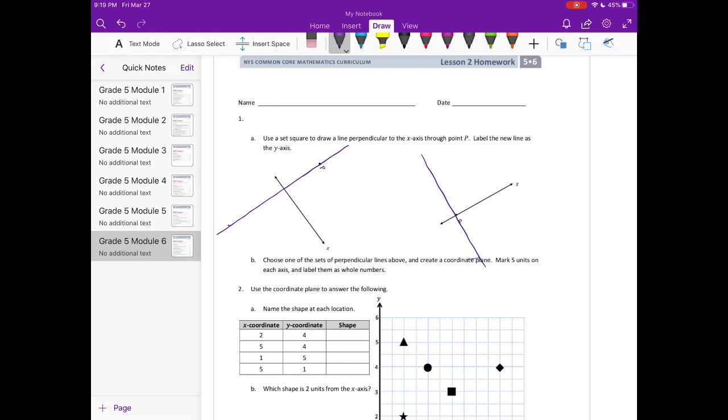I didn't, so I just used a ruler. You can put a piece of paper. The corner of a piece of paper will work as a set square to make sure that you have 90 degree angles. It says label the new line as the y-axis, so I'm going to label this as the y-axis.